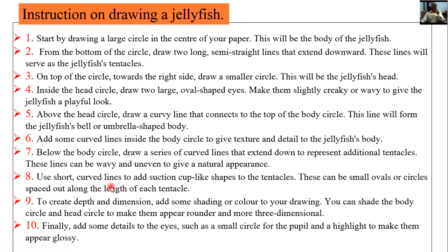Use short curved lines to add suction-cup-like shapes to the tentacles — these can be small ovals or circles spaced out along the length of each tentacle. To create depth and dimension, add some shading or color to your drawing. Shade the body circle and head circle to make them appear rounder and more three-dimensional. Finally, add details to the eyes such as a small circle for the pupil and a highlight to make them appear glossy. Thank you for today — I will be coming with the new reading section of this unit.